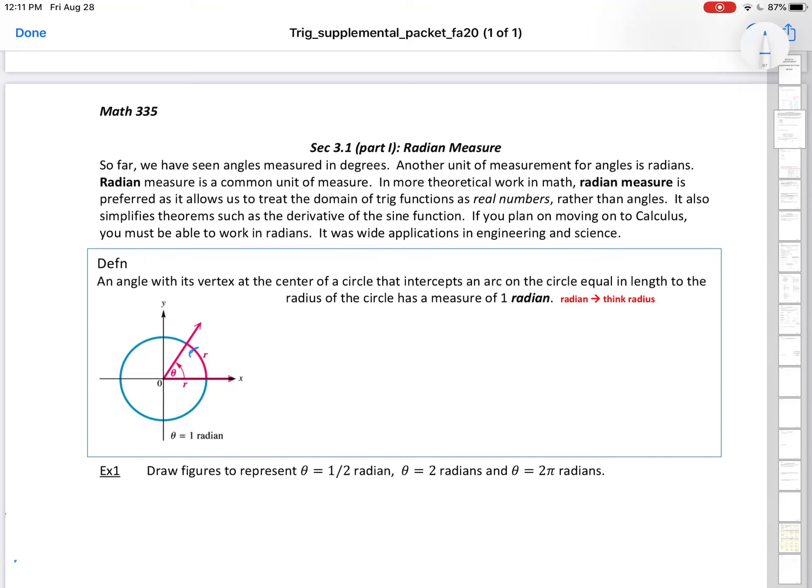Welcome to section 3.1. We thought it would be a good idea to jump to this section 3.1, look at part of it, and then come back to chapter 2. The main reason for that is to introduce you to another unit of measurement for angles, which is better. It's called radian measure.